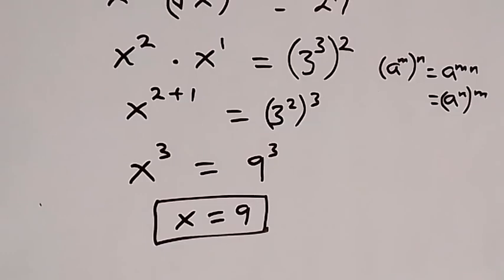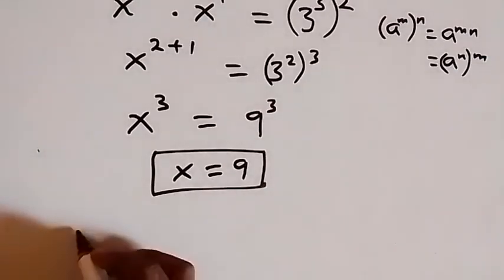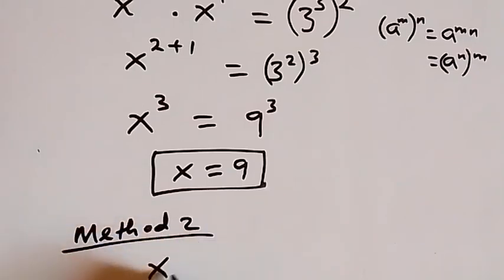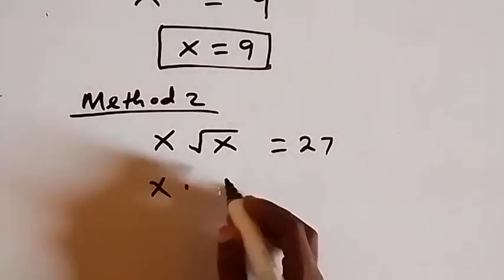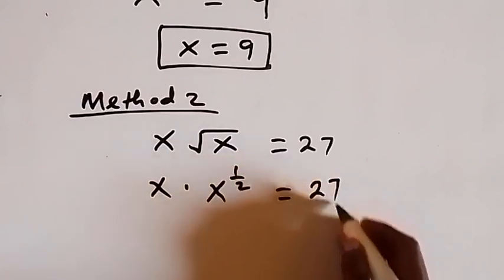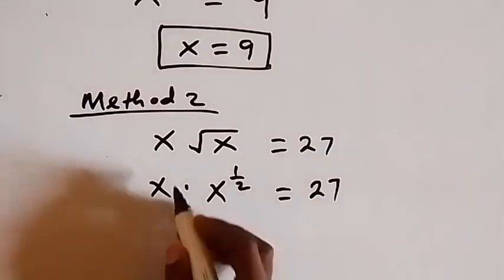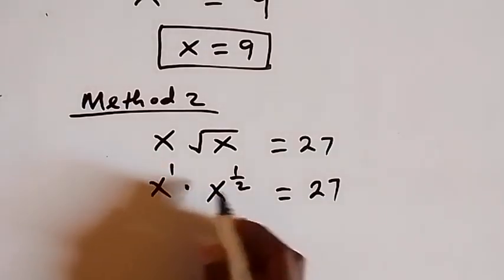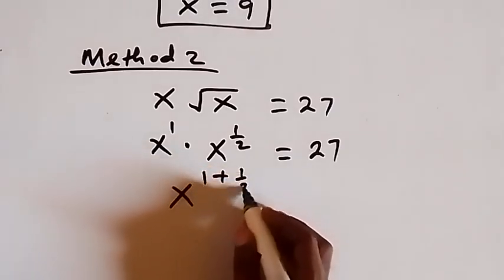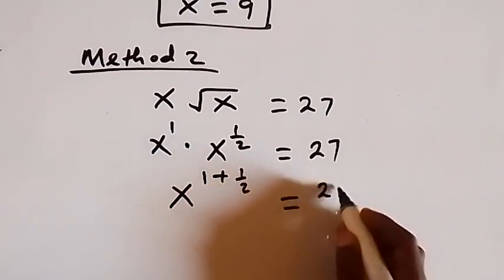To use the second method, method 2, from what is given, x root x equals to 27. We can write root x as x raised to power 1/2. So we have x times x raised to power 1/2. When we sum this power from the law of indices, we have x raised to power 1 plus half, which equals to 27.